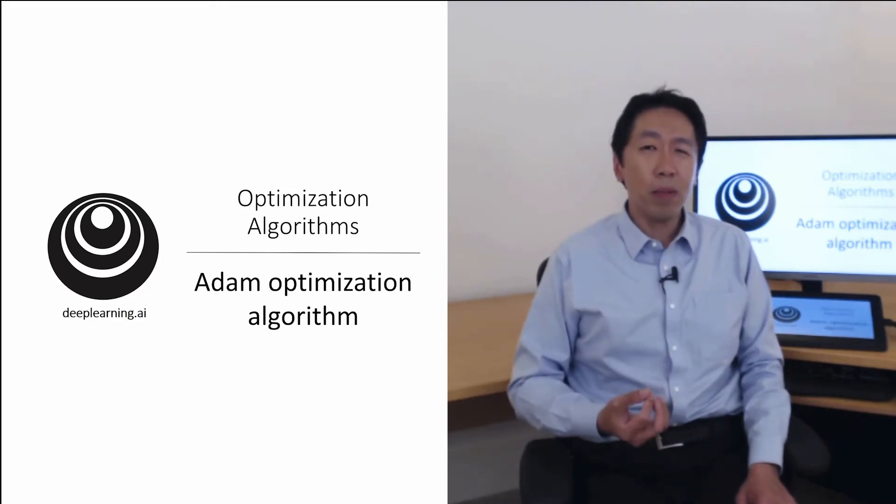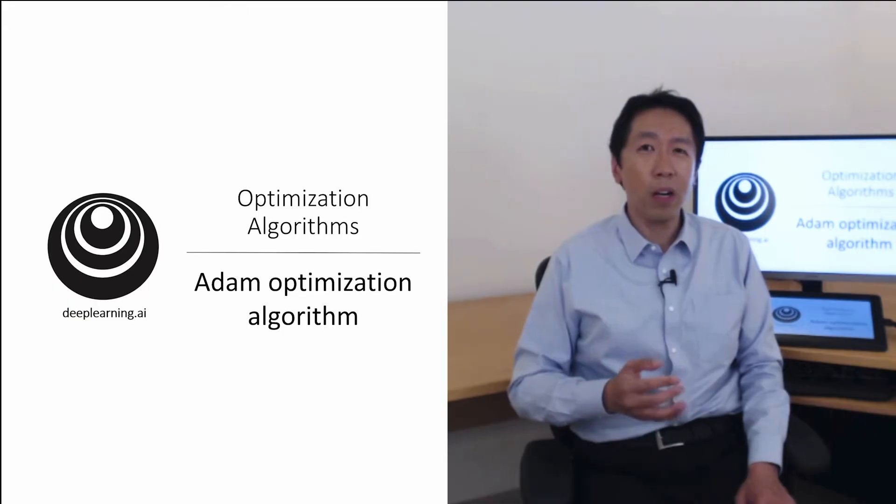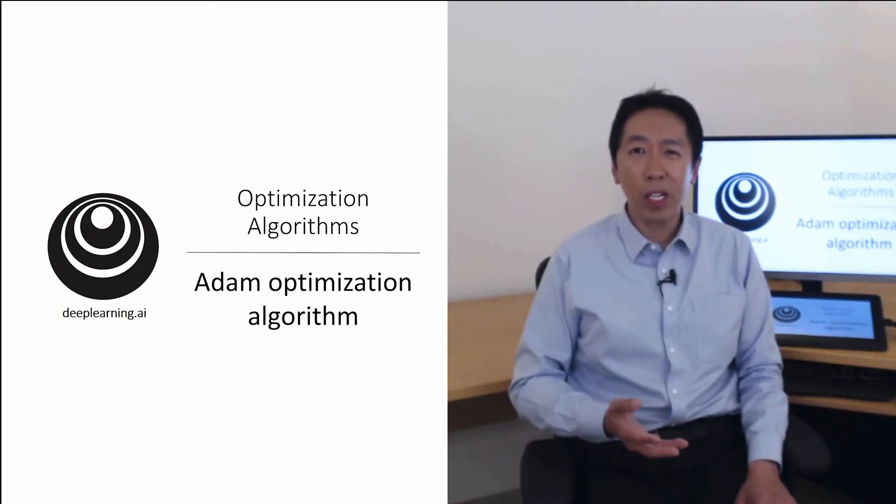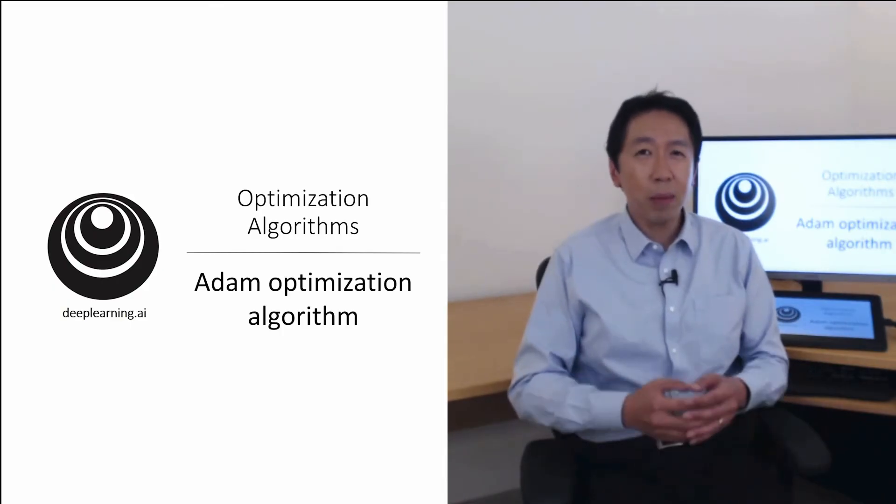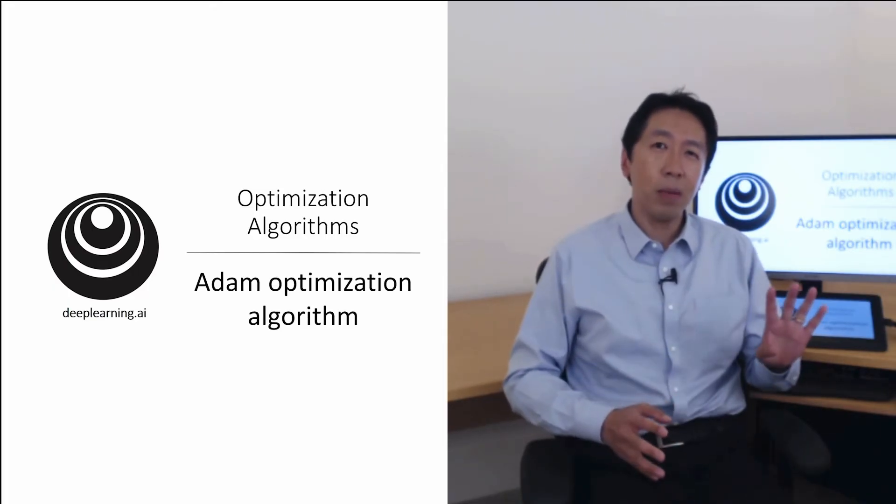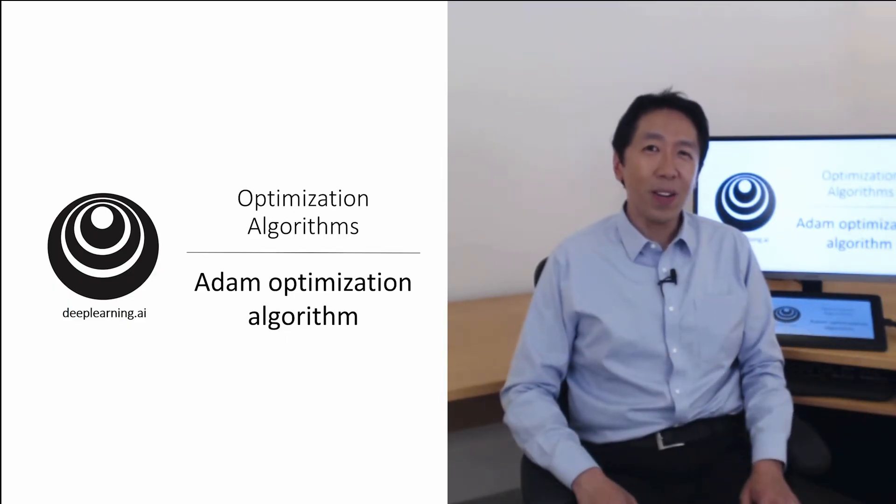So RMSprop and the Adam optimization algorithm, which we'll talk about in this video, is one of those rare algorithms that has really stood up and has been shown to work well across a wide range of deep learning architectures. So this is one of the algorithms that I wouldn't hesitate to recommend you try, because many people have tried it and seen it work well on many problems. And the Adam optimization algorithm is basically taking momentum and RMSprop and putting them together. So let's see how that works.